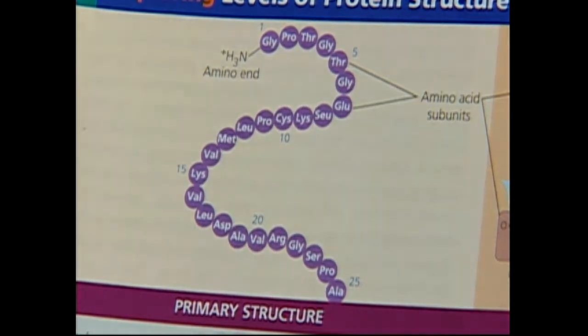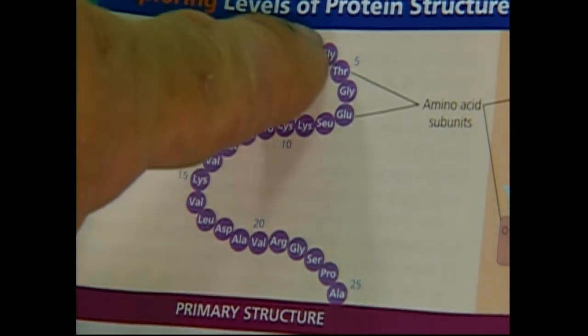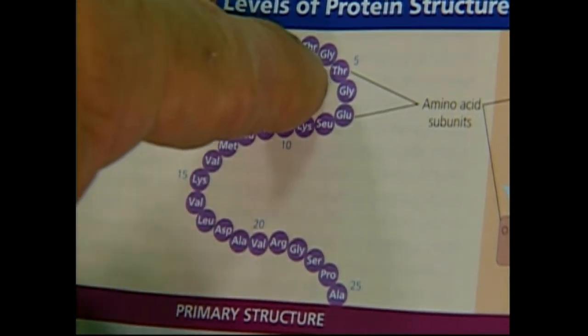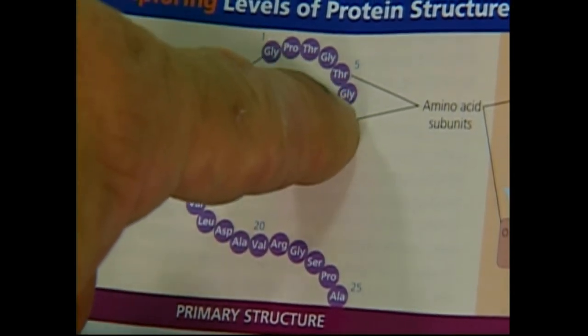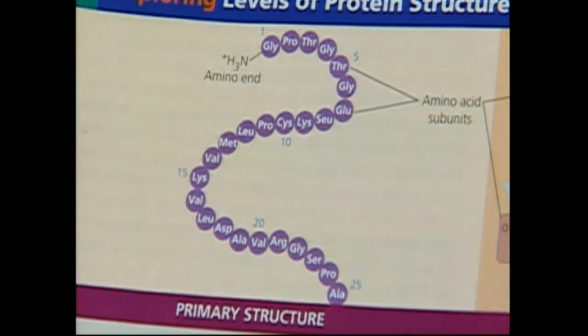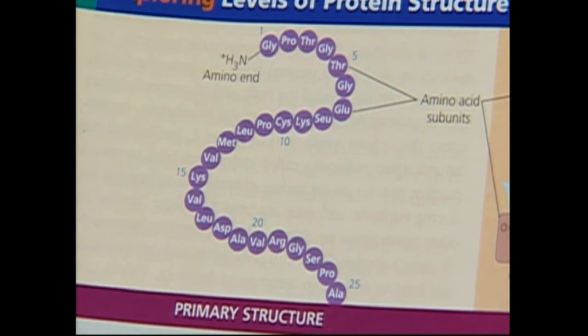Okay, the four structures. See, the primary structure is just naming what the amino acids are. So here's like glycine, proline, threonine, glycine, threonine, glycine. They're all going repeated. So that's called the primary structure. It's pretty much the naming of the order of these things.